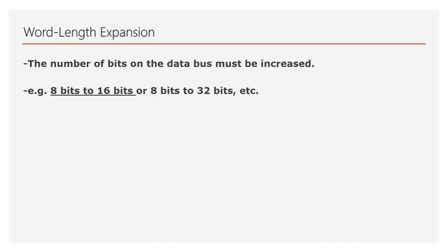In this first video I am going to do a word length expansion, and what this means is that the number of bits on the data bus must be increased. For instance, I've got a device which on the output has 8 bits and I want to go to a final device which is 16 bits, or maybe going from 8 bits to a new device that has 32 bits. So that is what word length means — I want to join only RAMs or only ROMs together to give more output width with data bits on the data bus.